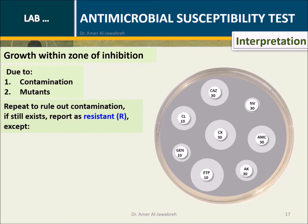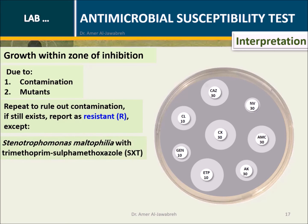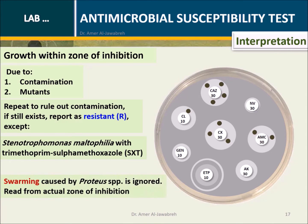If growth is observed within the zone of inhibition, this may be due to contamination or mutants — repeat to rule out contamination. If it still exists, report as resistant. Note: Stenotrophomonas maltophilia is reported with SXT. Swarming caused by Proteus species is ignored; read from the actual zone of inhibition.